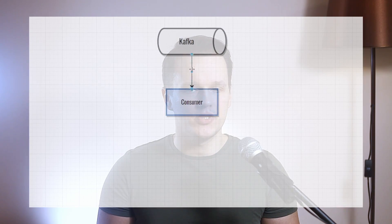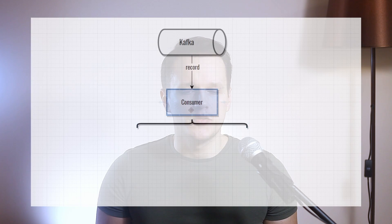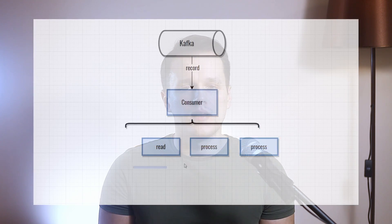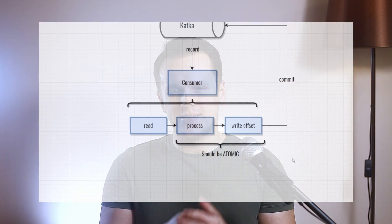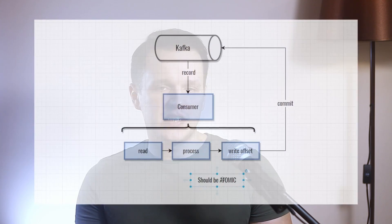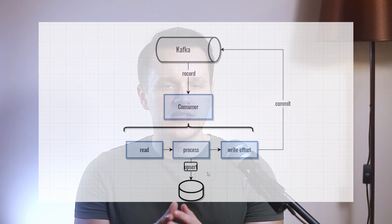How to handle exactly once for a consumer in a standalone application? It's not that simple, especially if the destination is not another Kafka topic, since such a use case is the same as the read-process-write scenario described above. To make the consumer exactly once, it's necessary to process the record and commit its offset in an atomic operation. One way to achieve this is to store the result of processing along with the offset — storing both offsets and data in the destination system, which can be a database or message queue, and updating them atomically. If the destination system supports idempotent operations, you can achieve the same effect by performing idempotent operations and then saving the offsets. This approach is also called effectively exactly once.